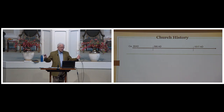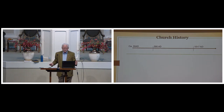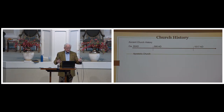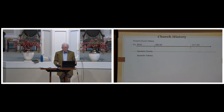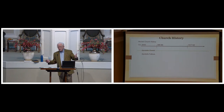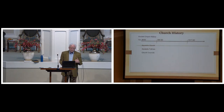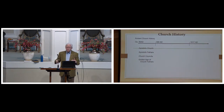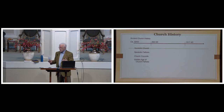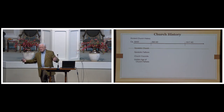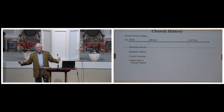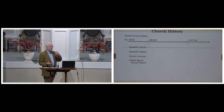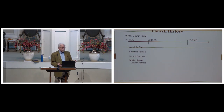This essentially, arbitrarily, breaks the church down into three periods. You have ancient church history, which includes the apostolic church, the apostolic fathers like Polycarp, the church councils — Nicaea, Chalcedon — the golden age of church fathers, which is Augustine, and preachers like John Chrysostom, called Golden Tongue because of his ability to preach.